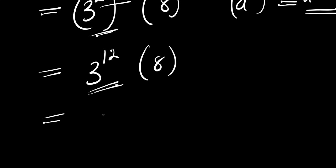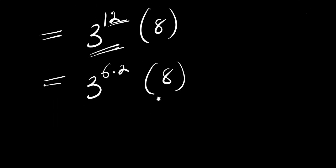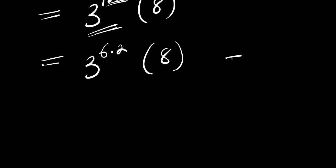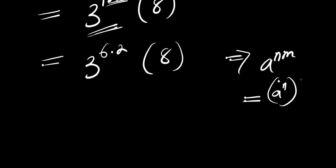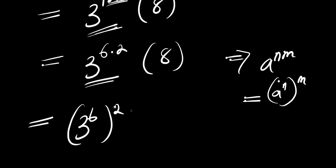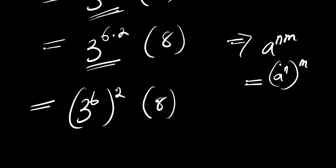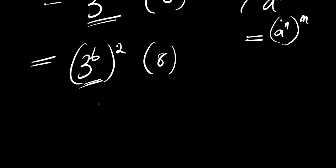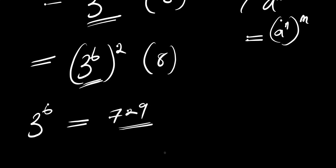Now, instead of 3 power 12, we can write the exponent as 6 times 2, then multiply by 8. Applying the identity a power (n·m) = (a power n) all to the power of m, we get 3 power 6, all squared. Now 3 power 6 simply means 3 multiplied in 6 places, which equals 729.